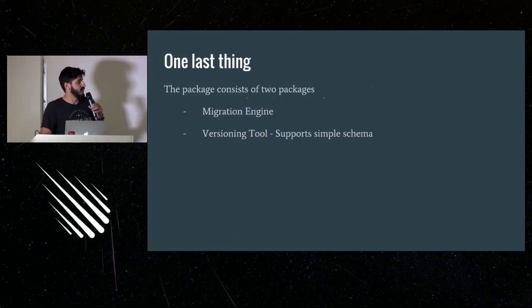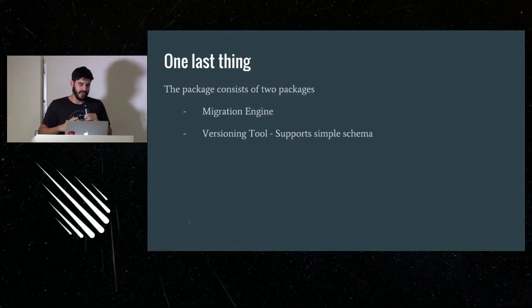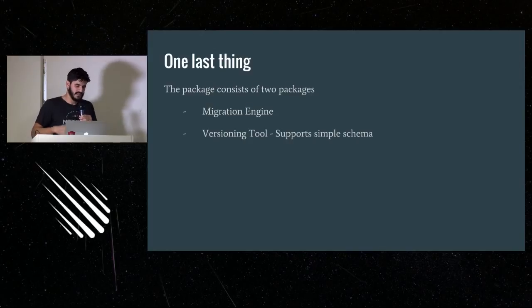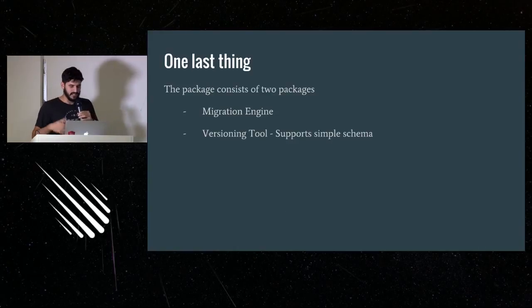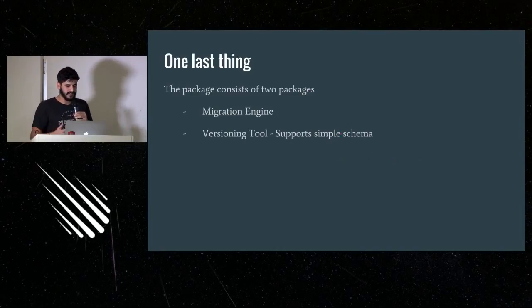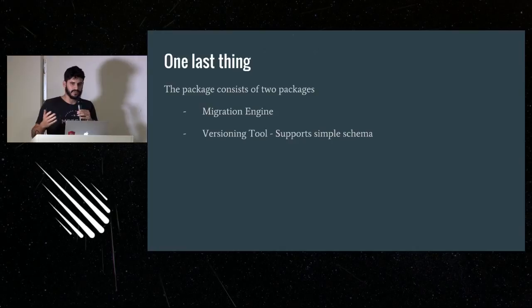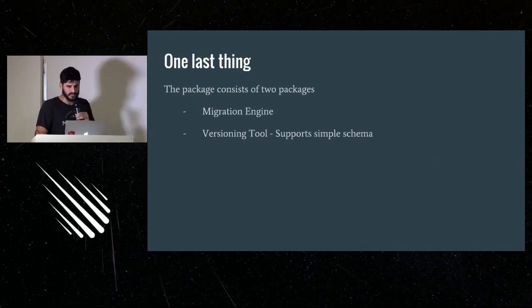One last thing: this package is actually divided into two packages. The first is the bookmd-schema-migrations migration engine. The second is the simple-schema-versioning package written by David. By replacing the simple-schema versioning tool, you could extend this package to support different schema types like Joi, Astronomy, or whatever comes next — so it's extensible and future-proof.